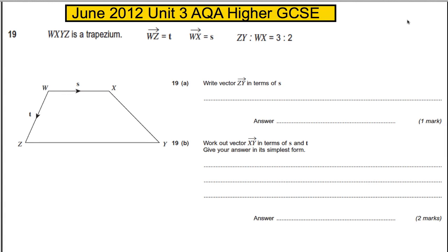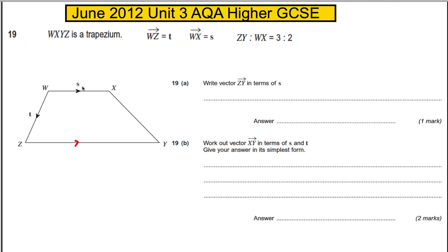This is the last question on the paper. We are told that WXYZ is a trapezium, so it has two parallel sides. The vector from W to Z is t — direction is very important — and the vector from W to X is s. We are told that the distance between Z and Y to the distance between W and X is in the ratio 3 to 2.